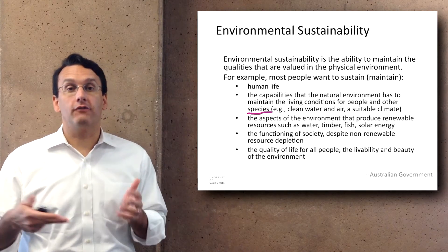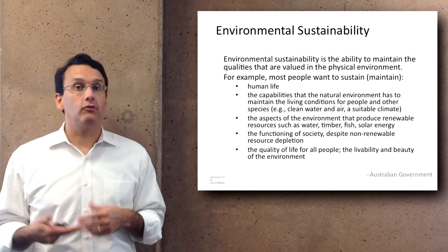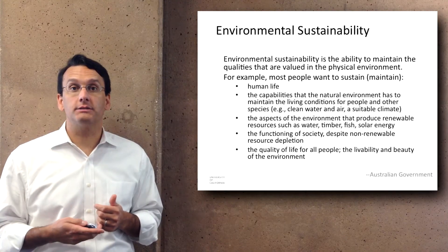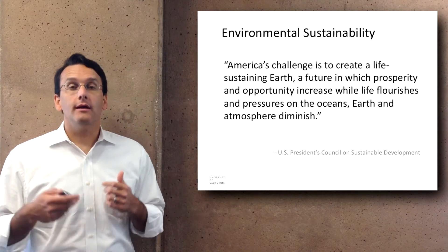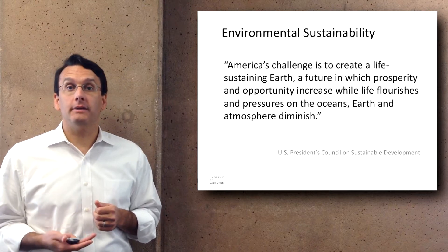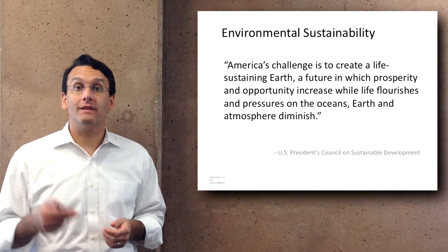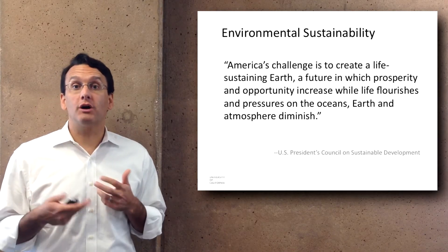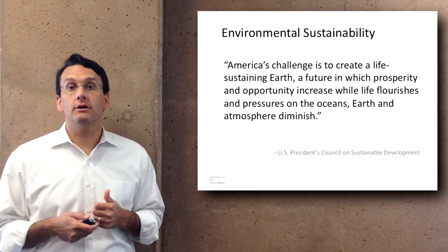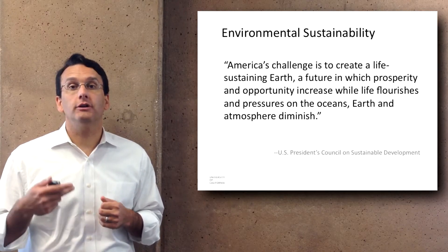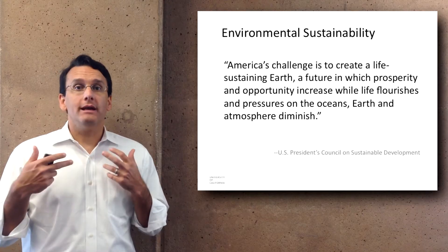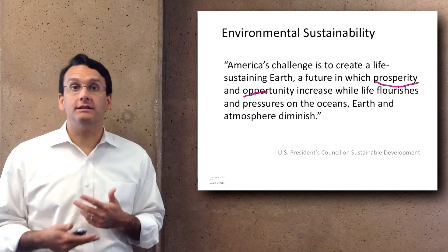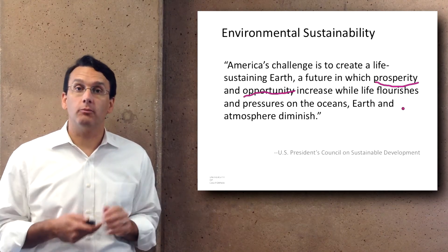This definition is interesting because it mentions other species — it's the first definition we've discussed that explicitly calls out maintaining living conditions for non-human species, though later it only says the quality of life for all people, not all species. The US President's Council on Sustainable Development defines it as creating a life-sustaining Earth where prosperity and opportunity increase while life flourishes and pressures on the ocean, earth, and atmosphere diminish — language that sounds more political than scientific.